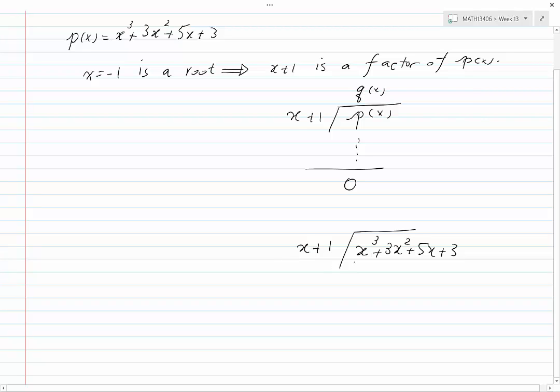we divide the leading term x cubed by the leading term x and we have x squared. Let's multiply x squared back into the divisor and write the answer after we flip the sign of every term.